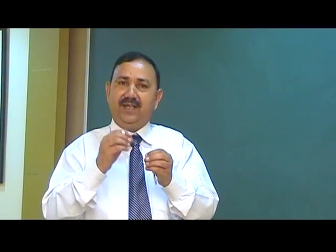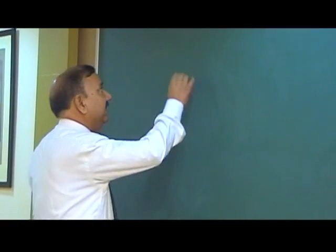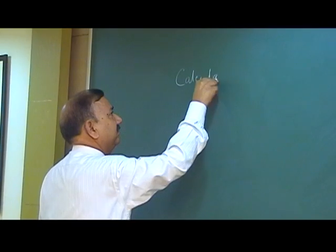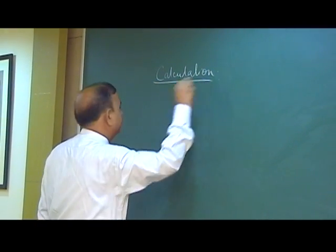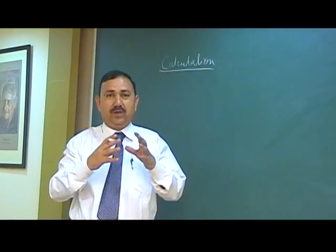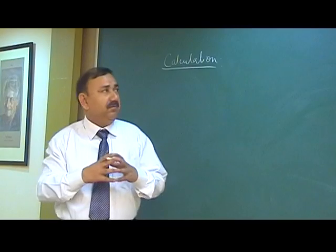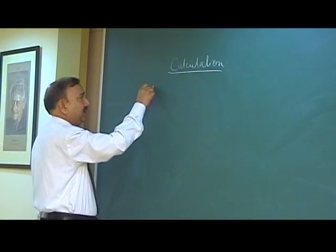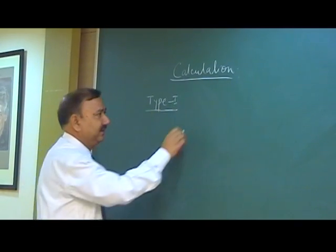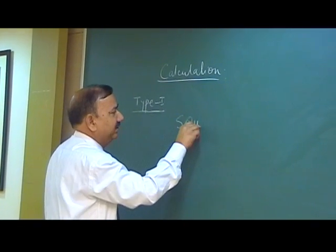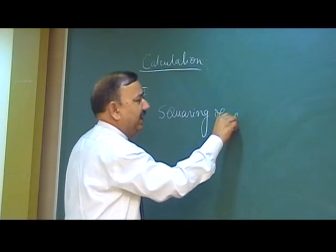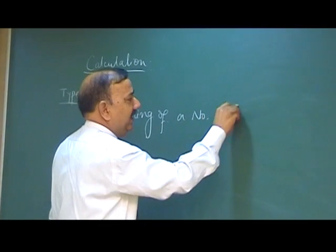The first technique I am explaining is how to calculate in the easiest way — the calculation technique. Today I will be explaining how to calculate faster than a calculator. The first topic is: how to square quickly — squaring of a number which is ending with 5.